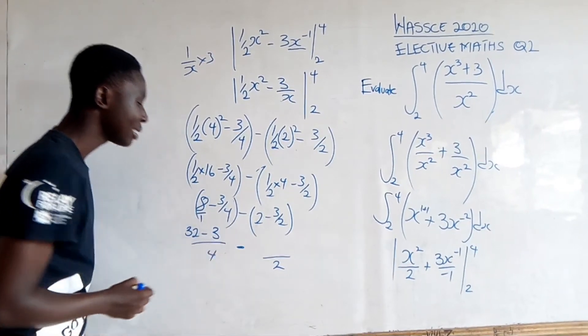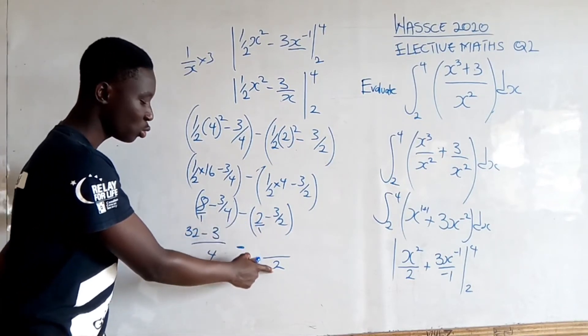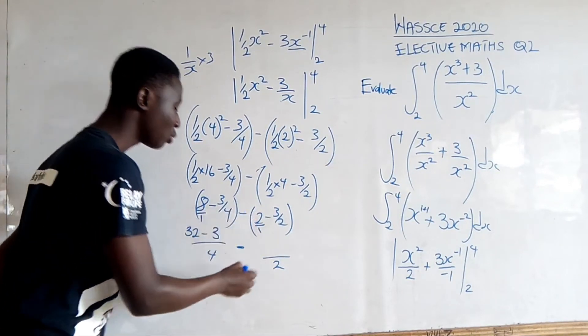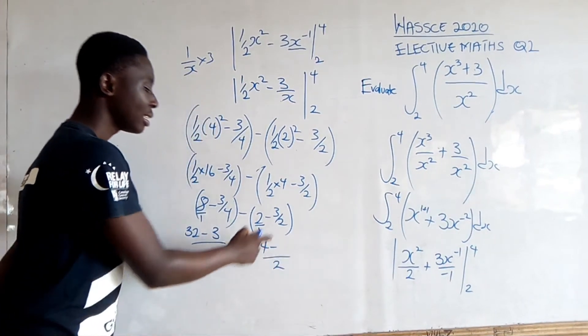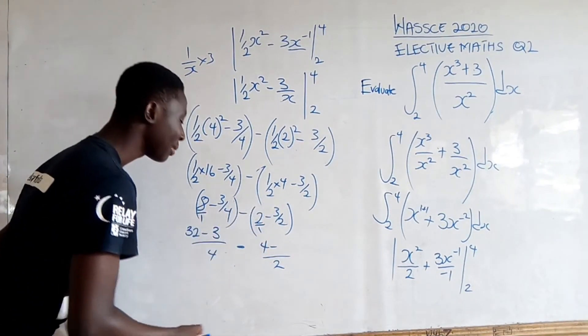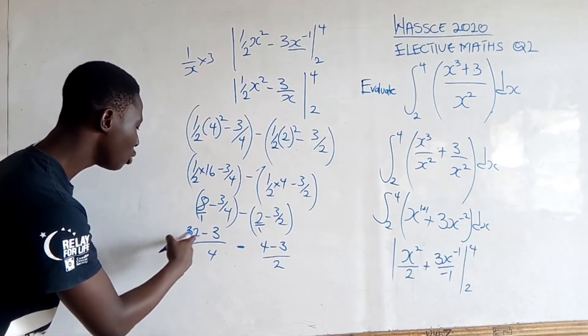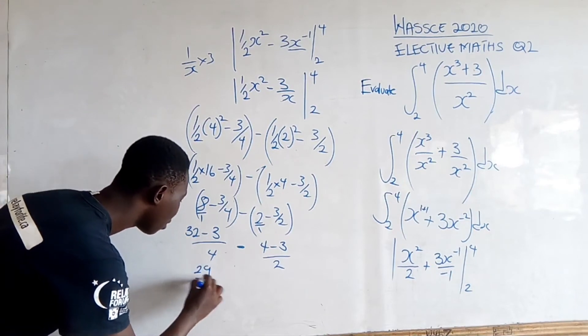This is over 1, so 1 goes into 2 two times, 2 times 2 is 4, minus 2 times 1 is 1, 1 times 3 is 3. We get 32 minus 3, which is 29 over 4.